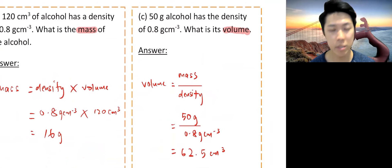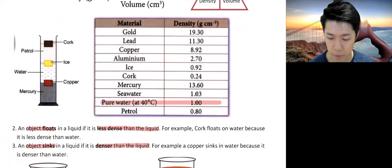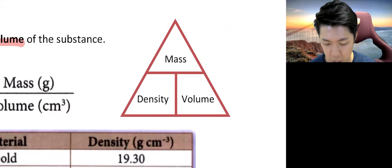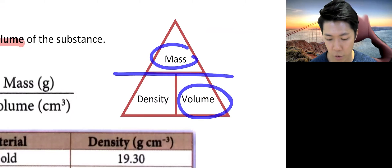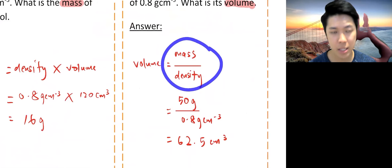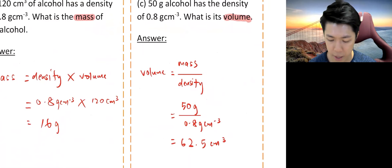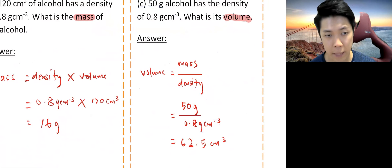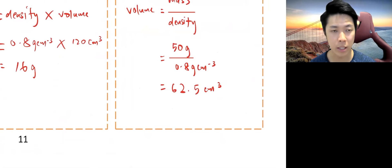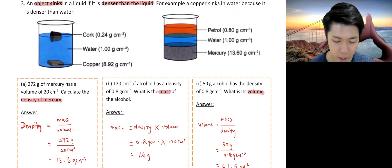Third example. 50 grams of alcohol has the density of 0.8 g cm⁻³. Looking for volume. Again, if you don't remember, please refer to the triangle. So volume equals mass over density. Bring it down. Mass over density. So mass, 50 grams. Throw in your number and 0.8, that will be your density. And let your calculator do the job. 62.5 cm³, because we are looking for volume. Cool. That's it.